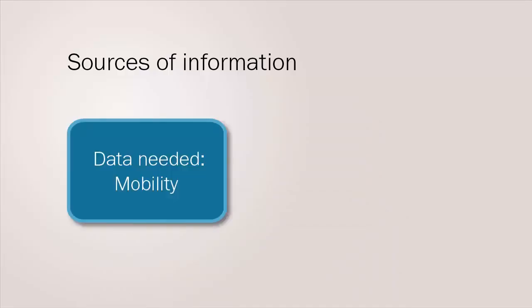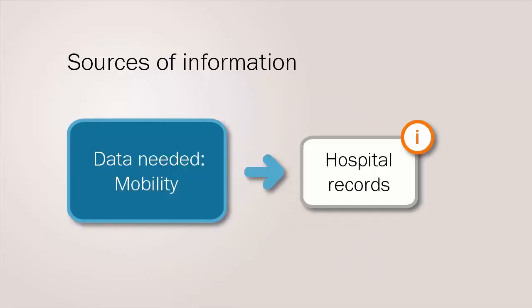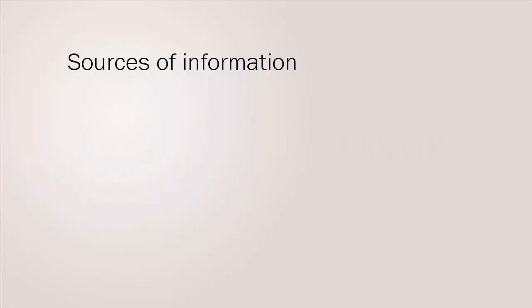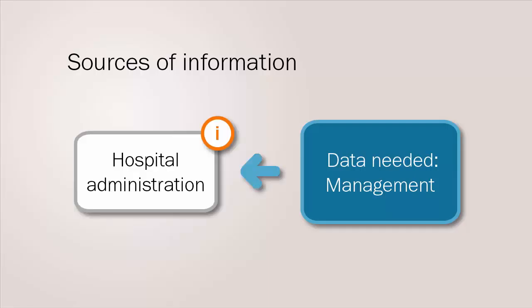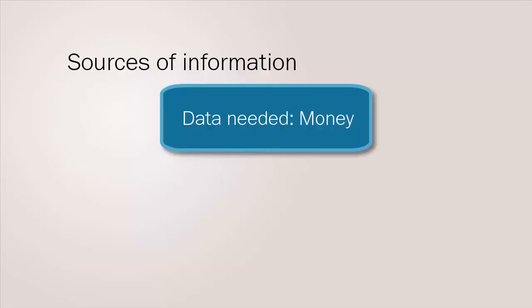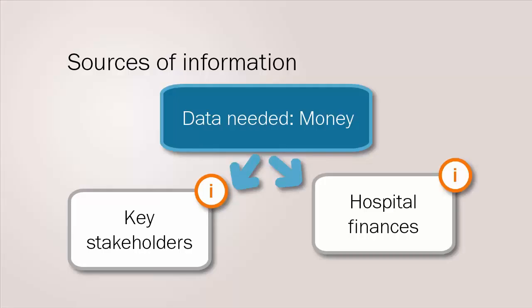For information on services, hospital records again should provide information on outreach models, locations and outputs. For information about management, we need to ask the hospital administration. And finally, to know how the unit is funded and how much money is available, we need to ask key stakeholders and look into the hospital finances.